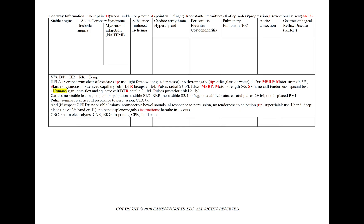For the location, we'll ask our patient to point with one finger. For duration, we want to know if the chest pain is constant or intermittent. If it is intermittent, we'd like to know the frequency — how long does it occur and how many times a day. We could also note the progression.